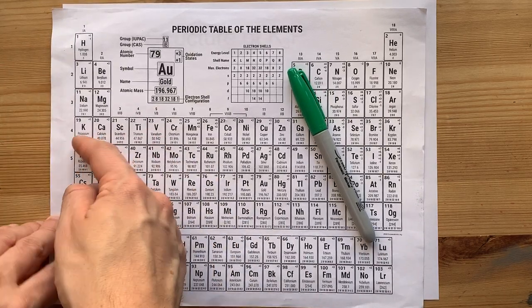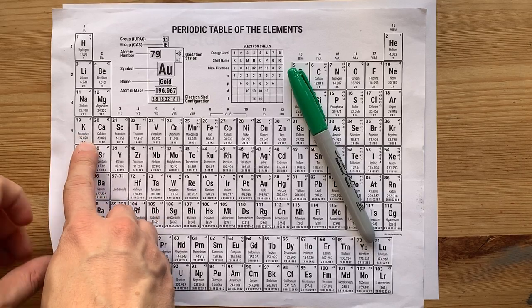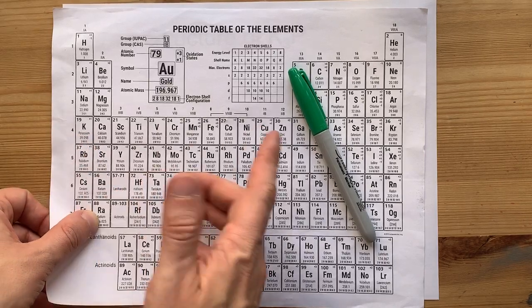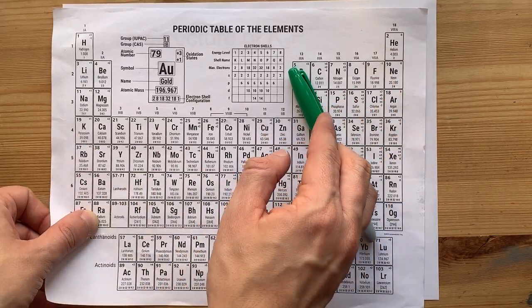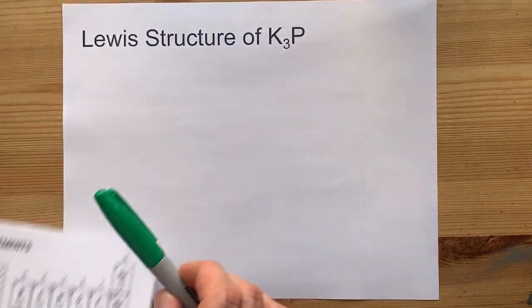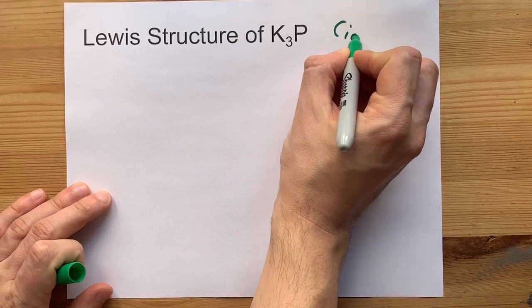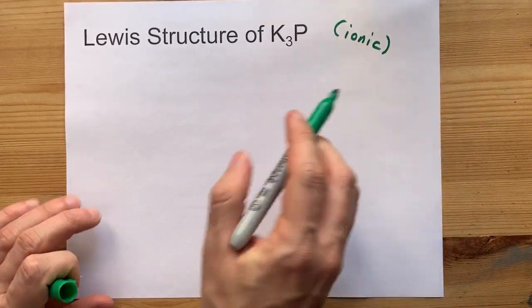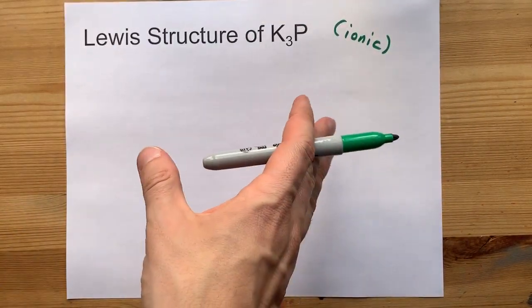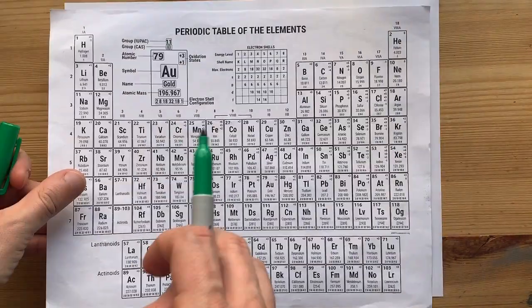Potassium is firmly to the left and is definitely an alkali metal. Phosphorus is to the right of the staircase, it's a non-metal. When metals and non-metals combine they form ionic compounds. The metals are going to give away their electrons to the non-metals.